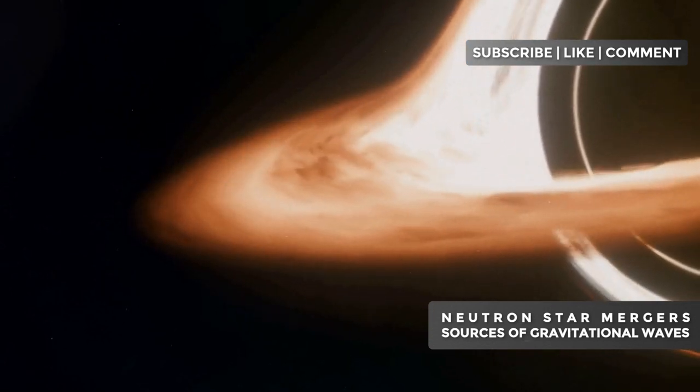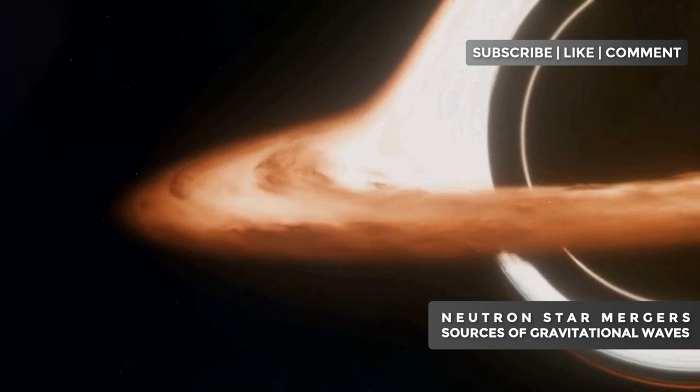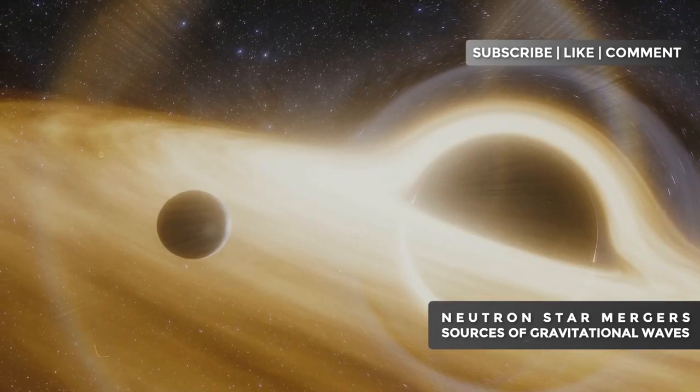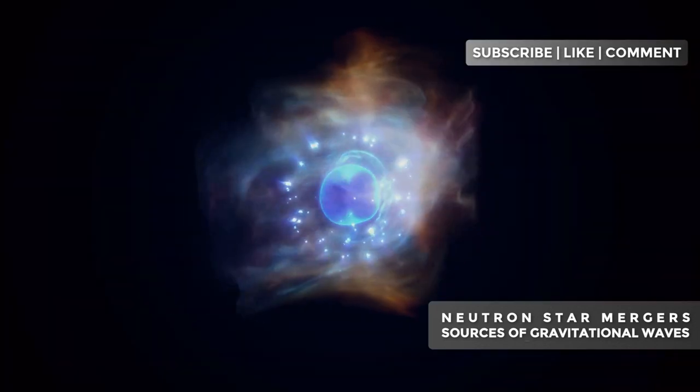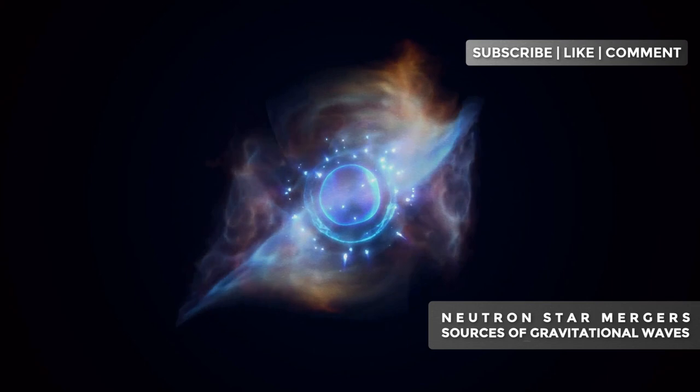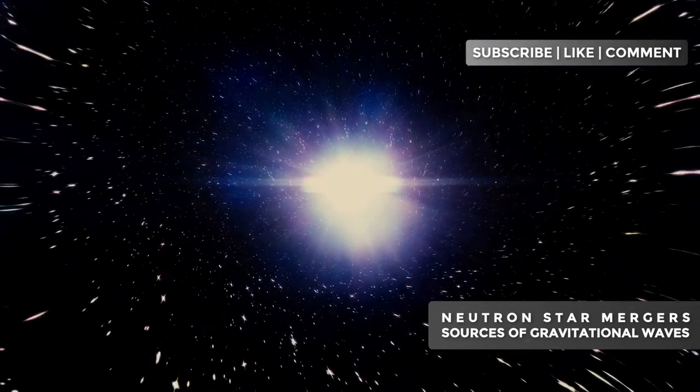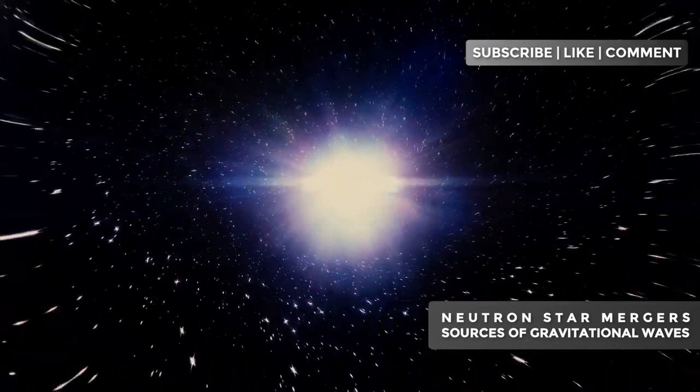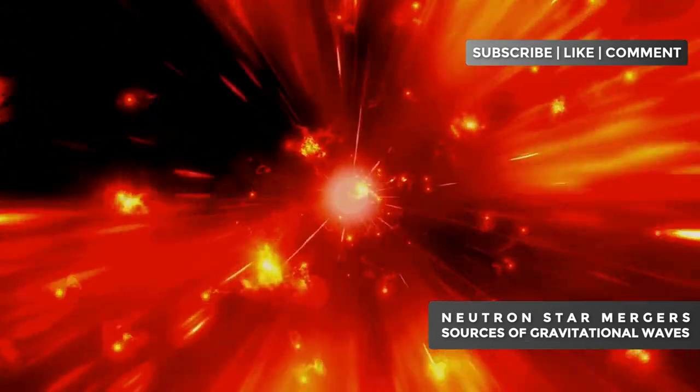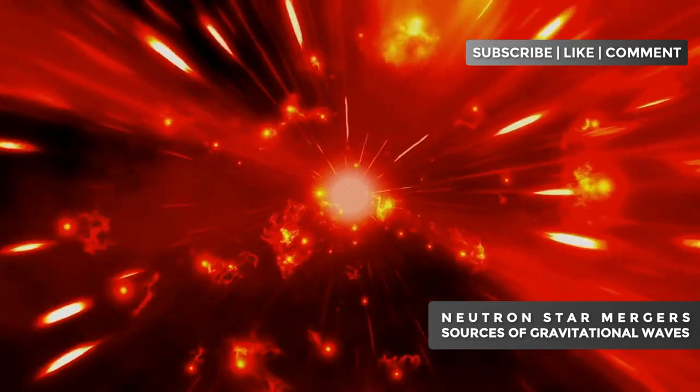Gravitational waves, predicted by Einstein over a century ago, are ripples in the very fabric of space-time. Imagine the universe as a stretched sheet. Massive objects like stars and planets create depressions in this sheet. When extremely massive objects like neutron stars move rapidly or collide, they generate waves that propagate throughout the cosmic sheet. These gravitational waves travel through the universe at the speed of light, carrying precious information about the events that generated them. It's as if we could hear the universe, picking up the echoes of these cataclysmic events occurring billions of light years away.